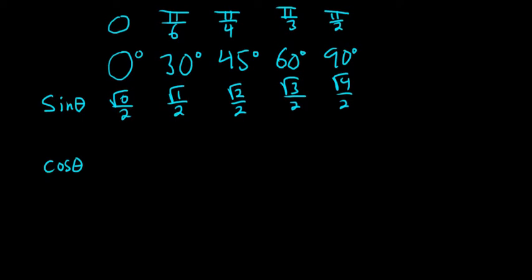Then over here you go backwards. You just start at 4. So you do square root of 4 over 2, square root of 3 over 2, square root of 2 over 2, square root of 1 over 2, square root of 0 over 2.